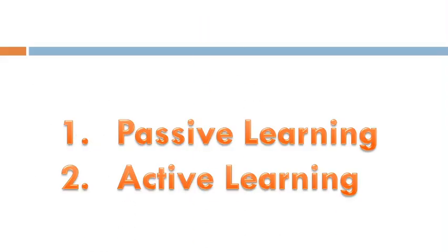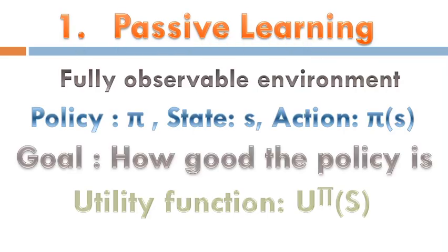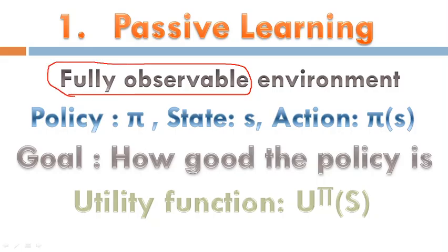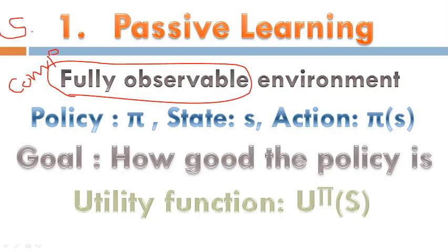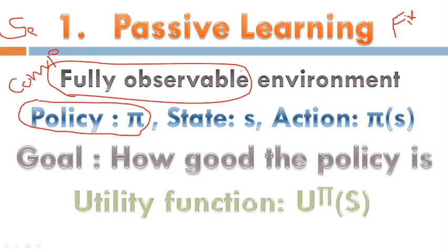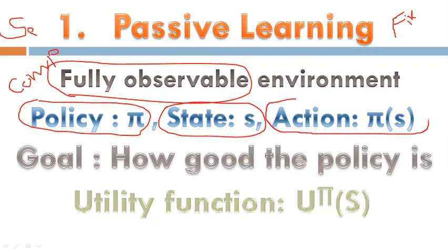Coming to passive learning — what is passive learning? Here we have a fully observable environment, meaning we are getting complete data and complete information through the sensors. The policy of passive learning is fixed. The policy is phi, the state is represented as s, and the action is represented as phi of s.